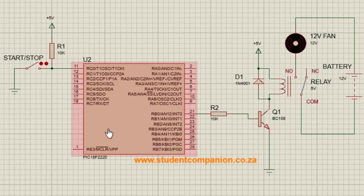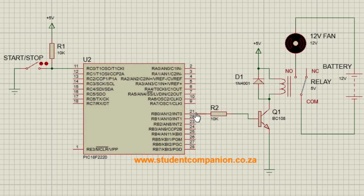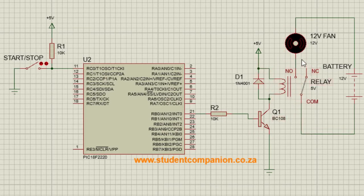In this demonstration, the microcontroller will switch on transistor Q1 when RB0 is high, which in turn will switch on the relay. Anything connected to the contact of the relay can thus be switched on and off, like this 12-volt fan in this demonstration.